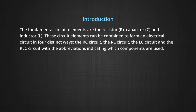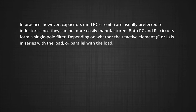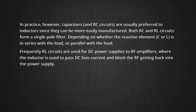The fundamental circuit elements are the resistor, capacitor, and inductor. These circuit elements can be combined to form an electrical circuit in four distinct ways: RC circuit, RL circuit, LC circuit, and RLC circuit. In practice, capacitors are usually preferred to inductors since they can be more easily manufactured. Both RC and RL circuits form a single pole filter, depending on whether the reactive element C or L is in series or parallel with the load. RL circuits are frequently used for DC power and in RF amplifiers, where the inductor passes DC bias current and blocks RF back into the power supply.